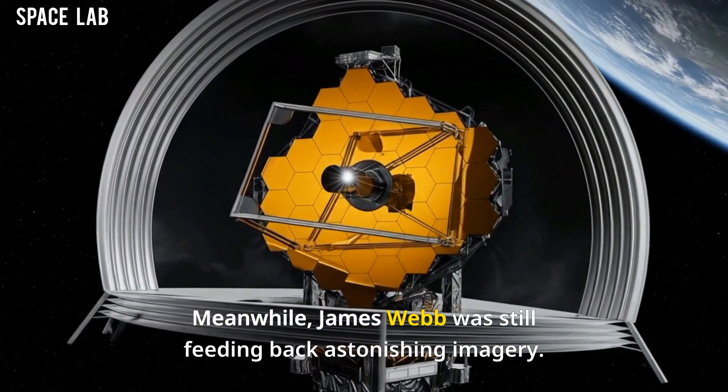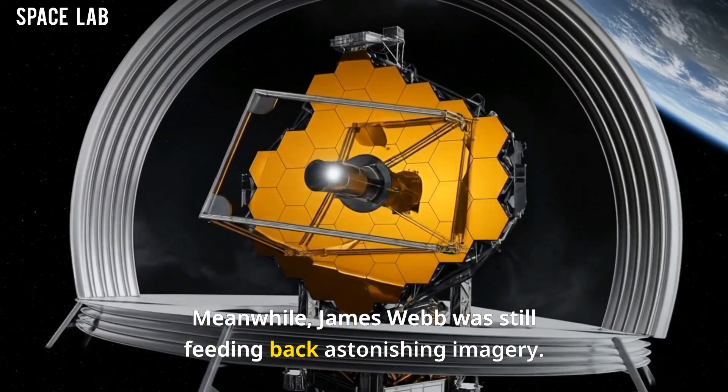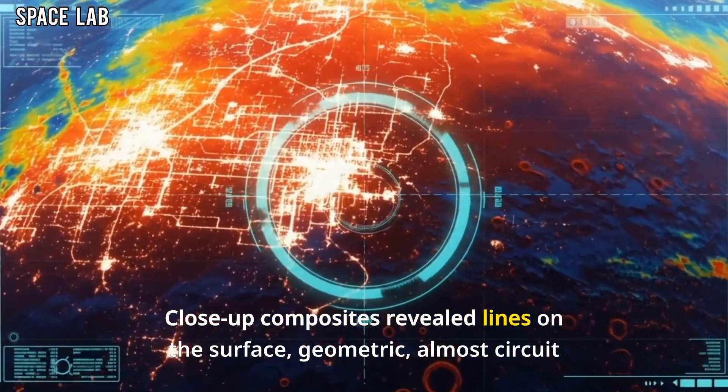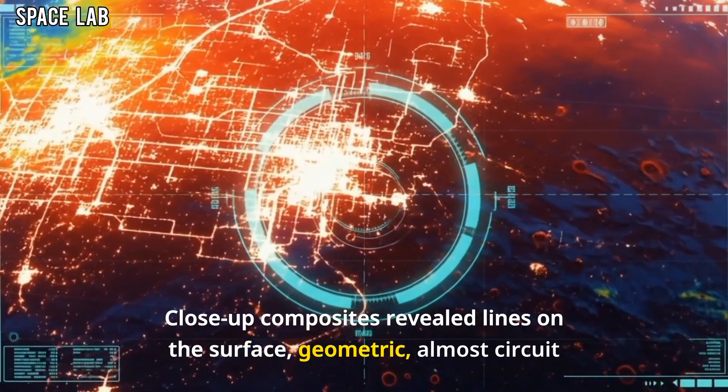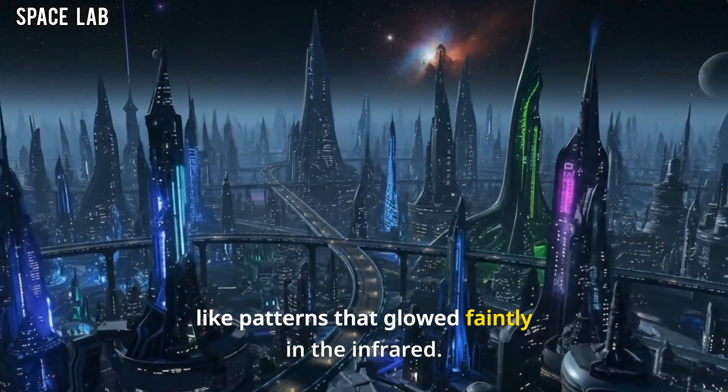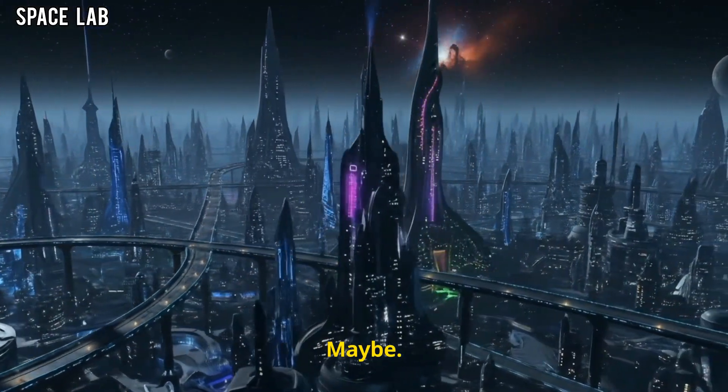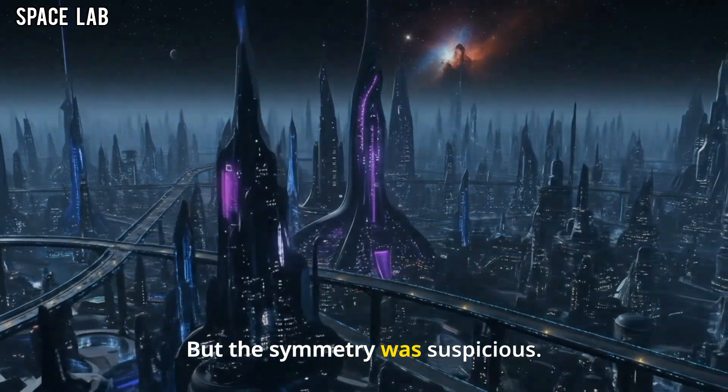Meanwhile, James Webb was still feeding back astonishing imagery. Close-up composites revealed lines on the surface, geometric, almost circuit-like patterns, that glowed faintly in the infrared. Natural mineral veins? Maybe. But the symmetry was suspicious.